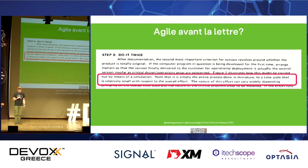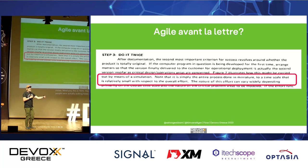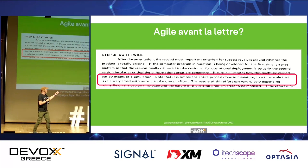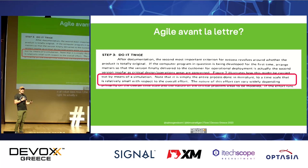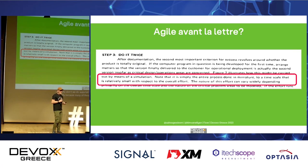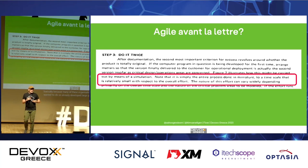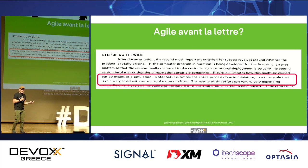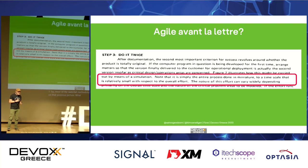What he is describing is ways to go back — you might say that looks a little like Agile. Further down the white paper he says: 'note that it is simply the entire process done in miniature to a timescale that is relatively small in respect to the overall effort.' He actually says if you push this into small iterations, or you might even call it sprints, then you're much better off. That is pretty much what Agile is — and this is 1970.